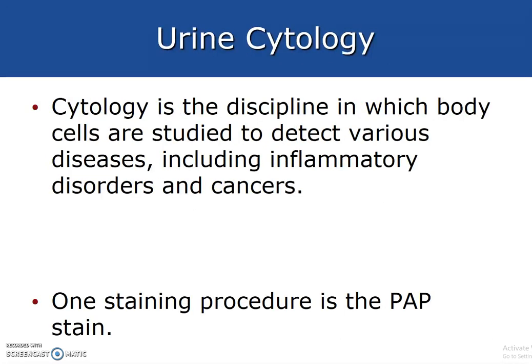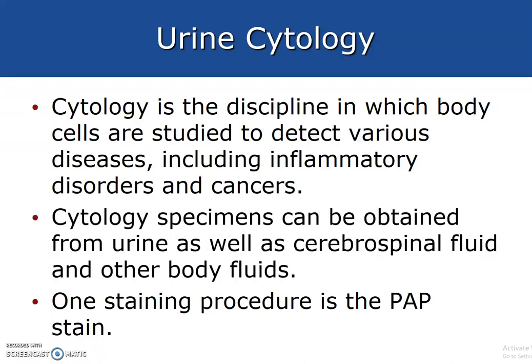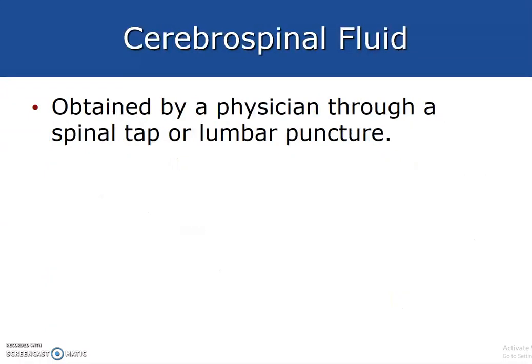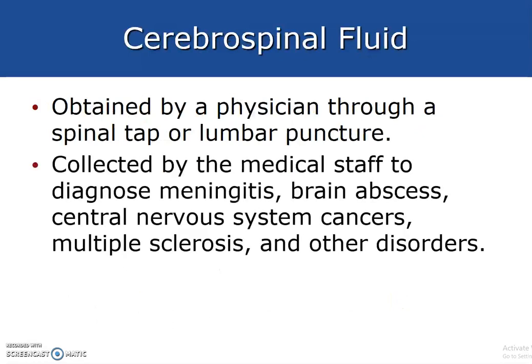Urine cytology: cytology is a discipline in which body cells are studied to detect various diseases, including inflammation, inflammatory disorders, and cancers. One procedure is the Pap stain. Cytology specimens can be obtained from urine as well as cerebrospinal fluid or other bodily fluids. Cerebrospinal fluid is obtained by a physician through a spinal tap or lumbar puncture and is collected to diagnose meningitis, brain abscess, central nervous system cancers, multiple sclerosis, and other disorders. It is also commonly done on patients with fevers of unknown origin, particularly when looking at a meningitis diagnosis.